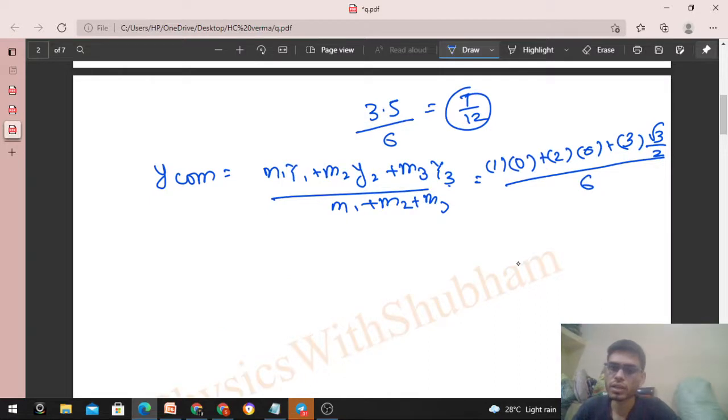Plus m₃ is 3, its y-coordinate is √3/2, divided by 6 (m₁ + m₂ + m₃). This gives 3√3/2 divided by 6, so √3/4. This is the y-coordinate of center of mass.